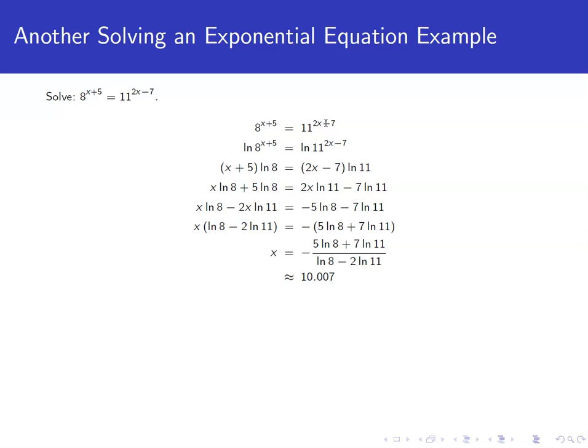Every logarithmic function has the property that if you have something raised to a power, you can bring the power down in front. So here we take the natural log of both sides. That allows us to bring the x plus 5 down in front on the left-hand side and the 2x minus 7 down in front on the right-hand side.